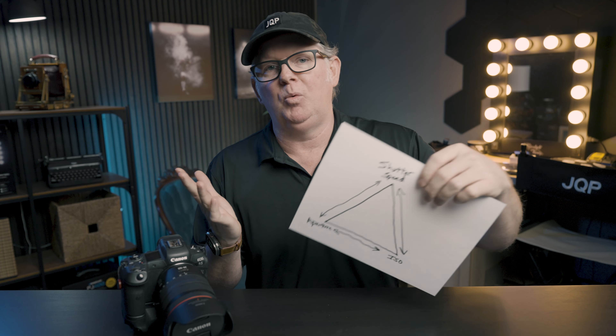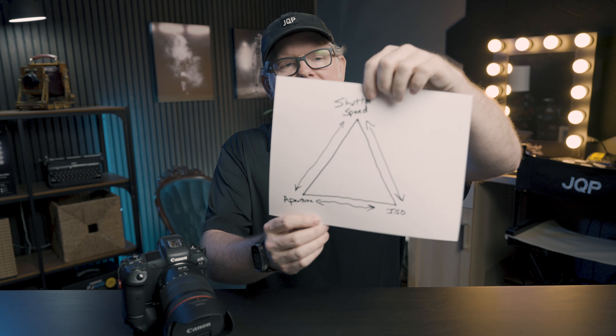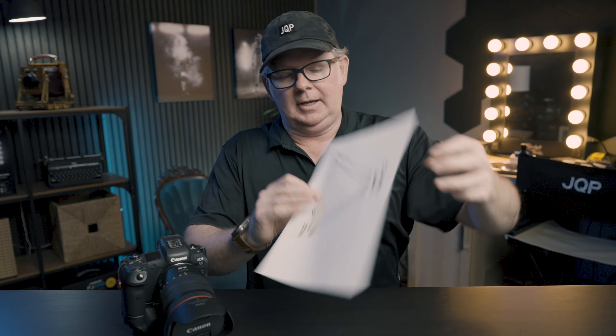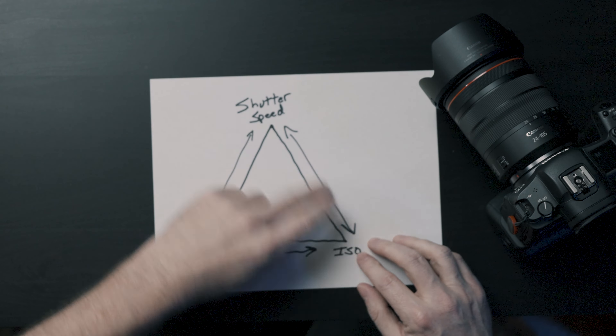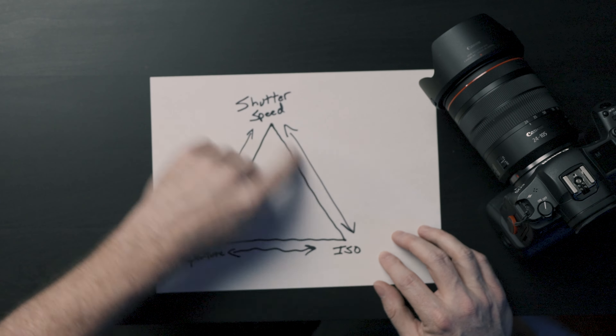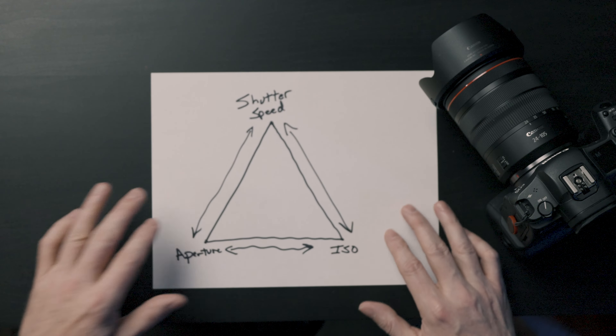Let's jump right into it. When it comes to exposure, we're looking at the three variables that make up our exposure — this is camera 101. I've roughly scripted out the exposure triangle that we're all familiar with: the relationships between shutter speed, aperture, and ISO. Each one affects the others, which is why we have this triangle. I've drawn arrows here to reflect that when we change shutter speed, it affects the other two values as well, and we'll have to compensate.